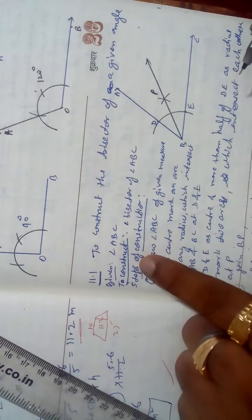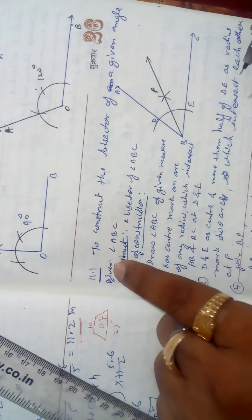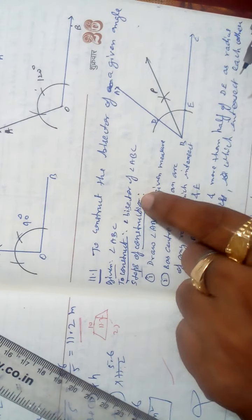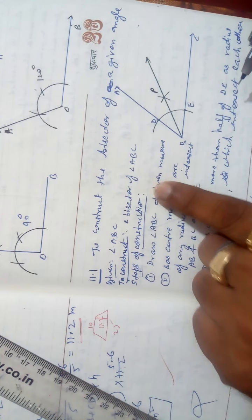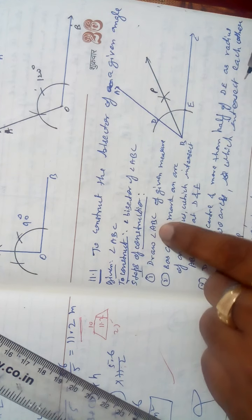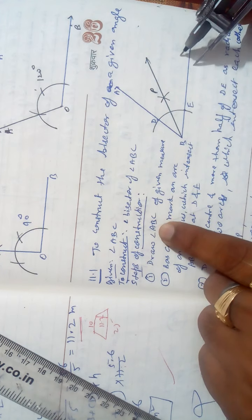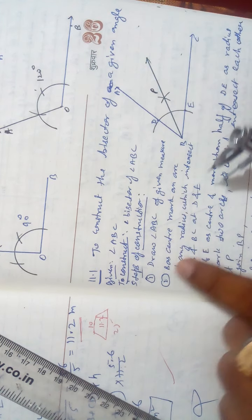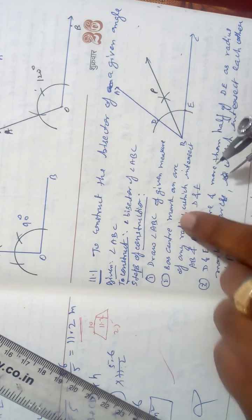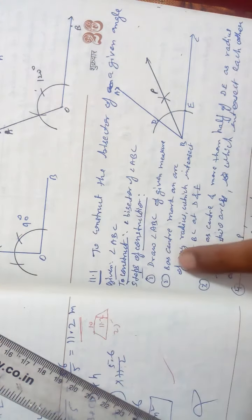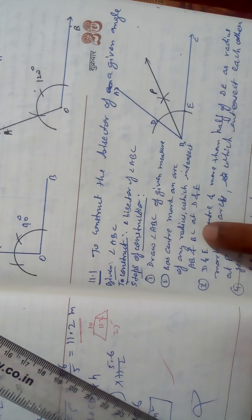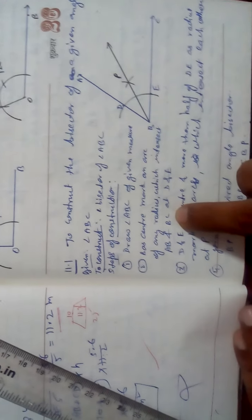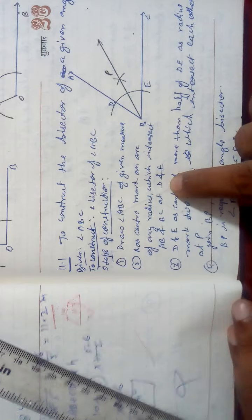This angle you want to bisect. Steps of construction — write: given, to construct the angle bisector. First step: draw angle ABC. Second step: with B as center, mark an arc of any radius which intersects AB and BC at D and E.